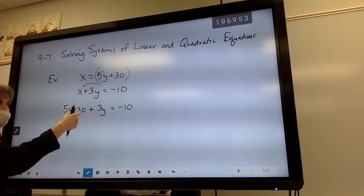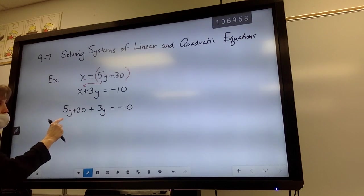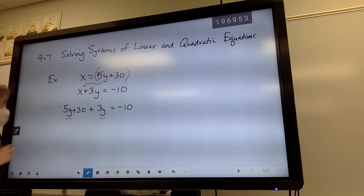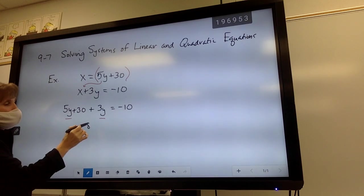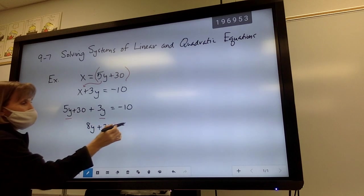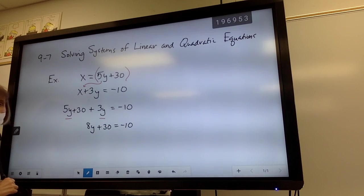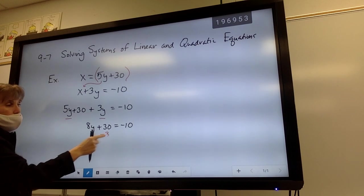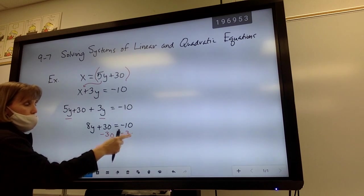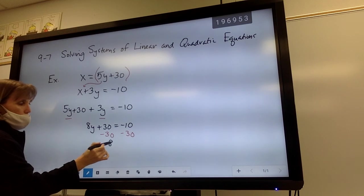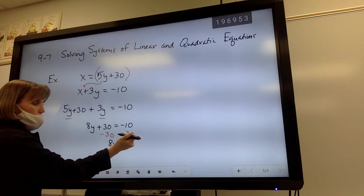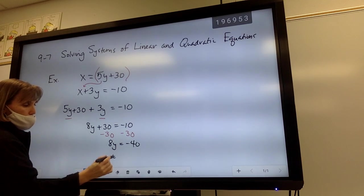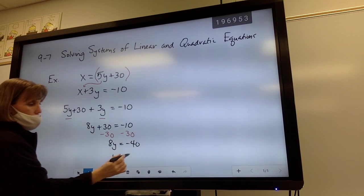When I solve this equation, I now just have one single variable, so I can combine like terms if they're on the same side of the equation. So that would be 8y plus 30 equals negative 10. Now you can add 10 to both sides. So I would subtract 30 from both sides and get 8y equals negative 40. Divide it by 8. Divide it by 8, so y equals negative 5.